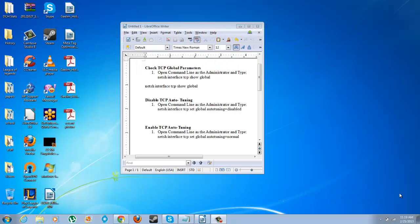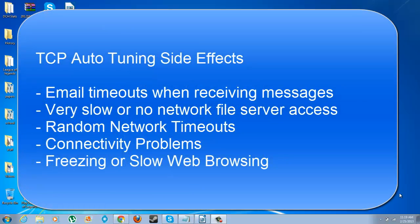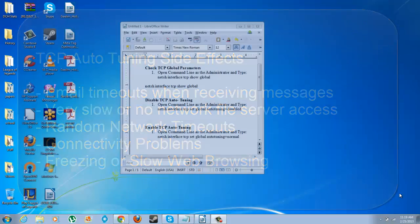This is in Windows, and what it does is it automatically controls how much data you can download, or how much internet data can go into a specific hardware device. What we want to do is disable the automatic option on it, because a lot of routers and firewalls don't configure well with your TCP auto-tuning option.